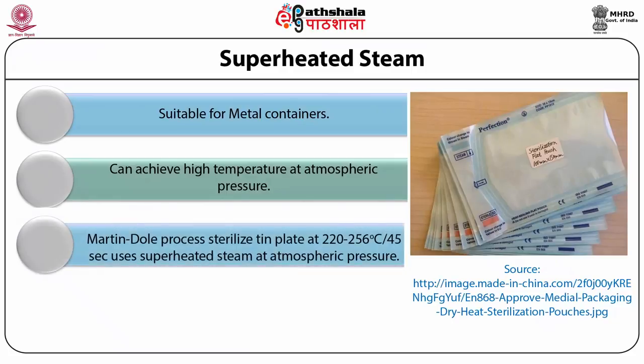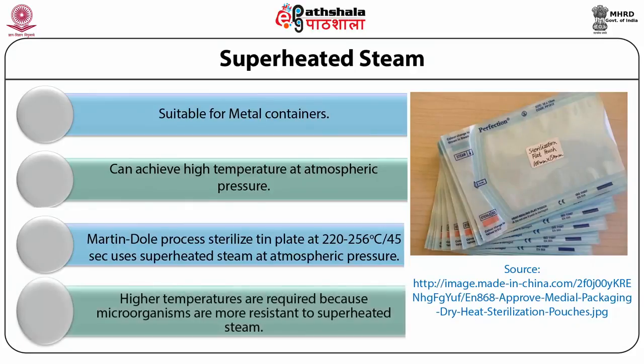The Martin-Dole process continuously sterilizes tin plate cans by passage through 220 to 256 degrees Celsius superheated steam at normal pressure for 45 seconds. However, microorganisms are more resistant to superheated steam than to saturated steam. Thus, higher temperatures are required when using superheated steam for sterilization.